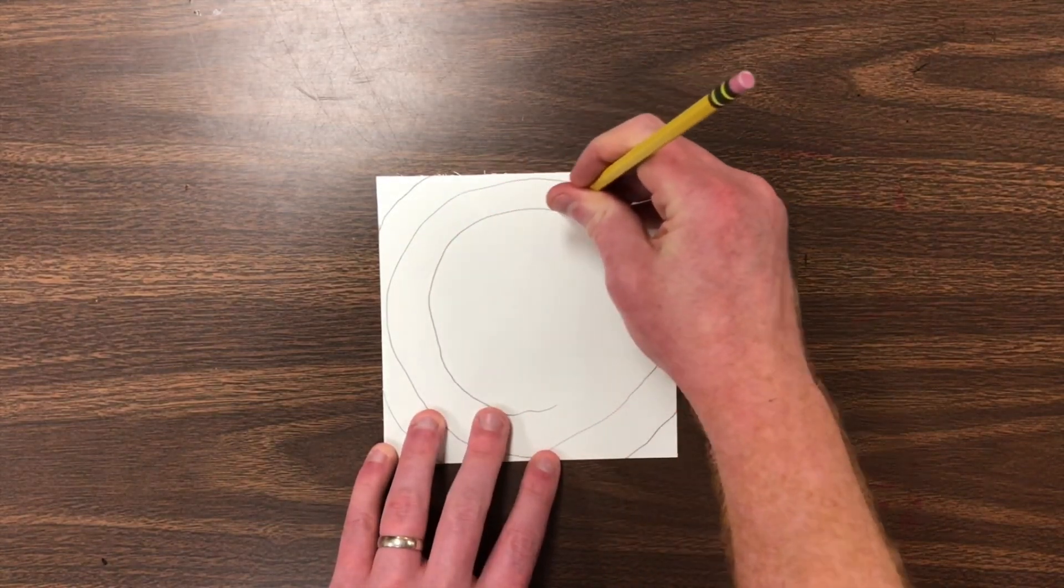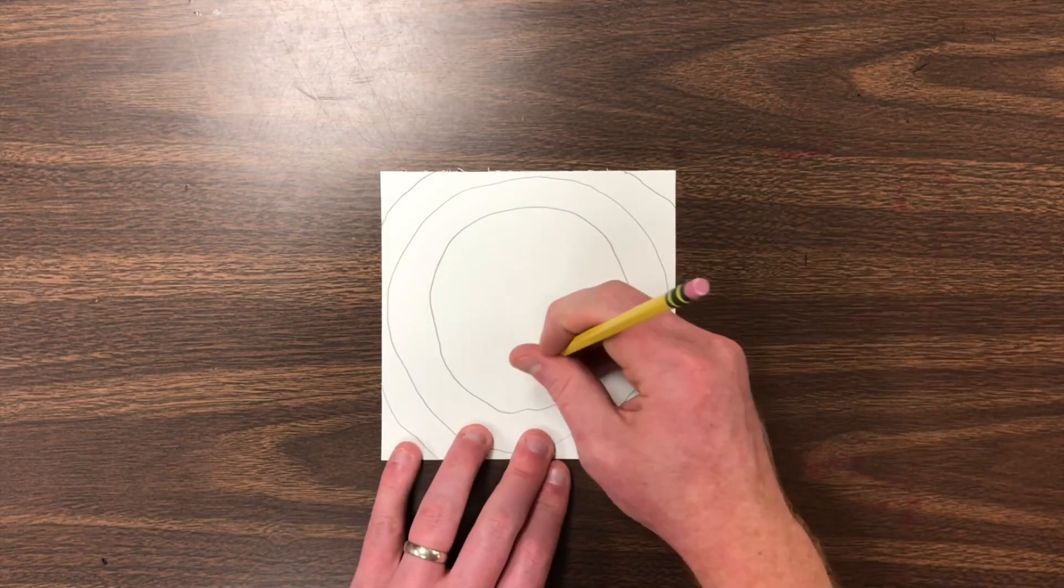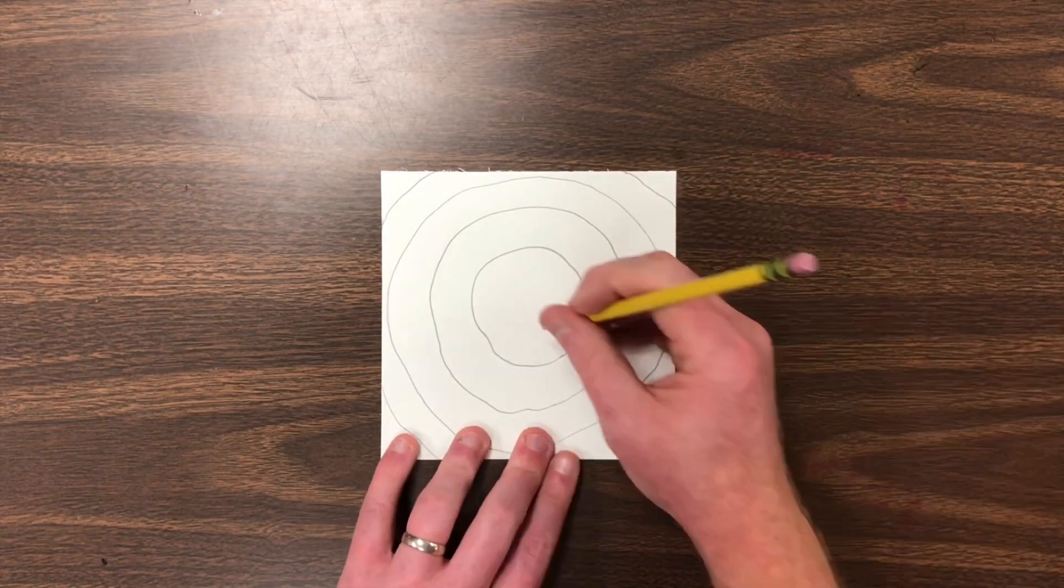Now, let's repeat a circle shape on the inside. And another. And another.